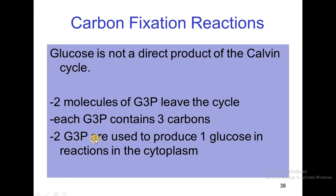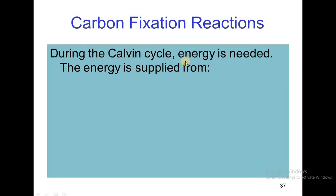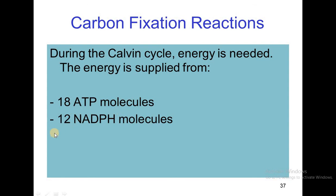These 2 glyceraldehyde 3-phosphate molecules are used to create 1 glucose molecule in the cytoplasm. During the Calvin cycle, energy is needed. This energy is supplied from 18 ATP molecules and 12 NADPH molecules.